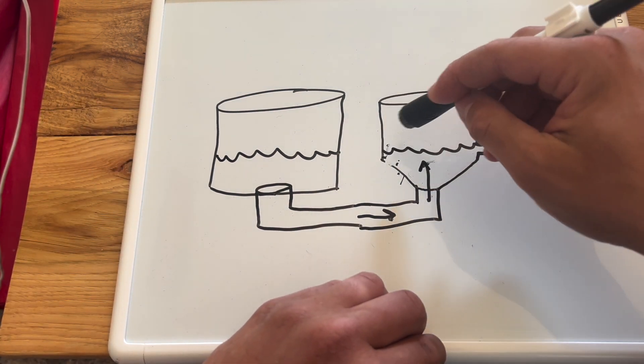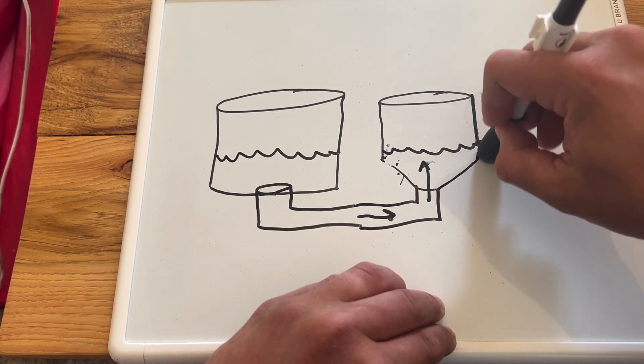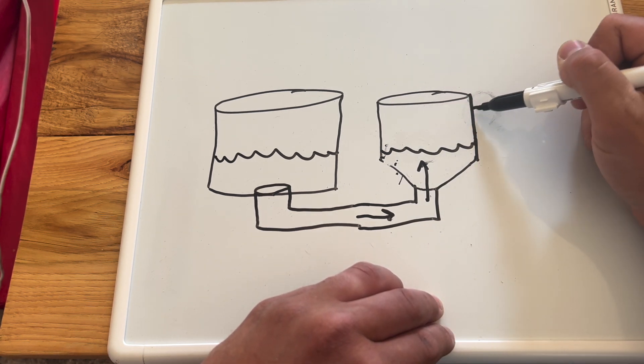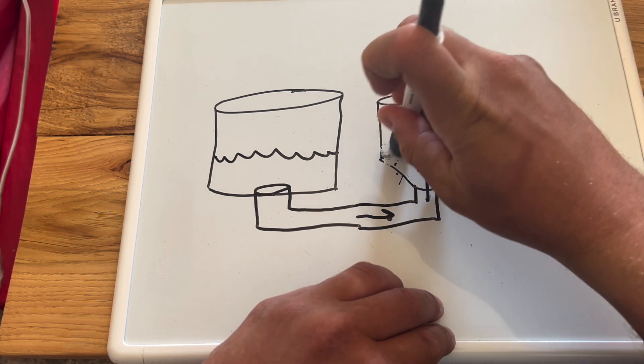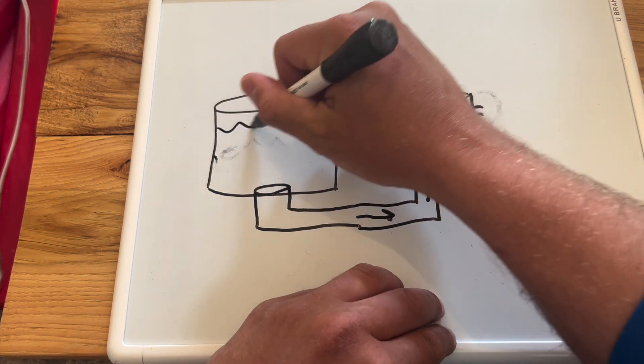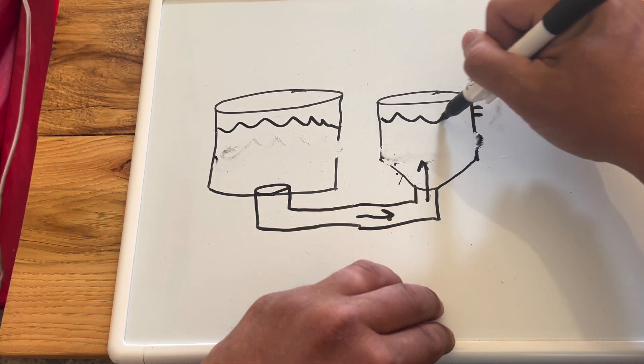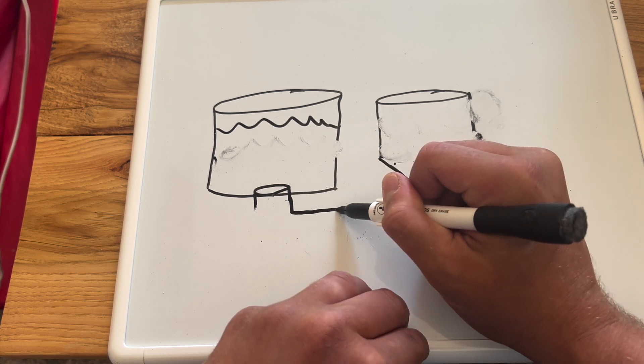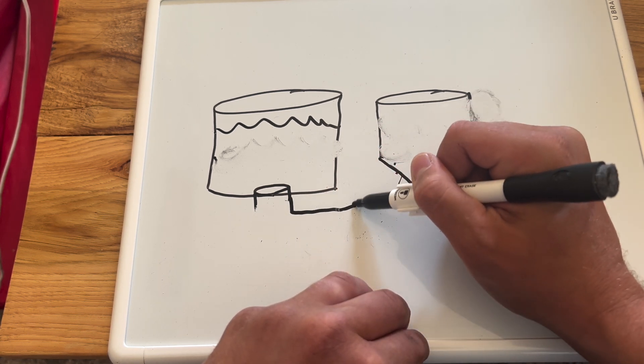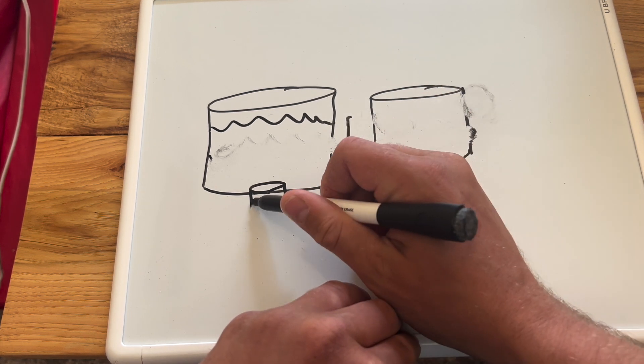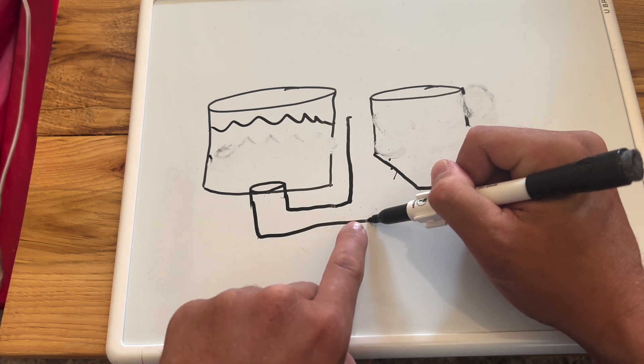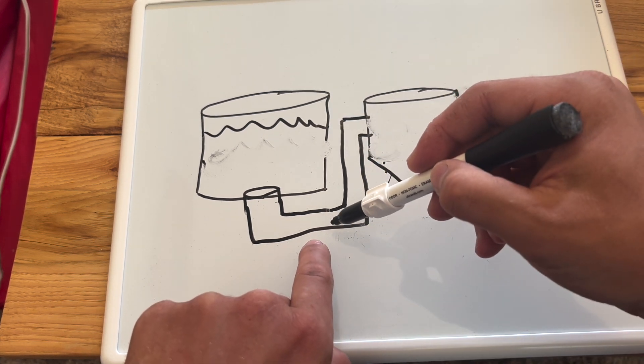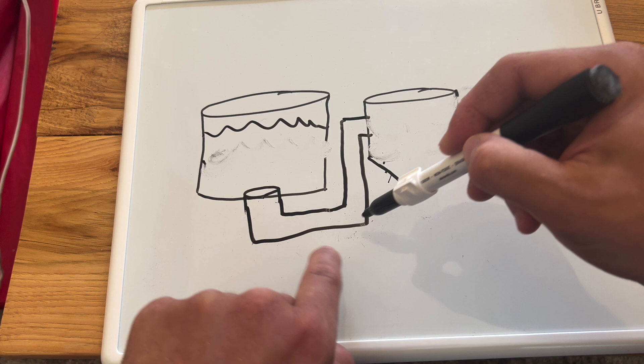So if you ever connect a center-bottom drain like this, you need to make sure that your exit is up higher. And that's going to allow your water height to be up there. You can also plumb it like this, and I would recommend, you see how I came up here at a 90 degree angle? You probably want to use two 45s so it's a more gradual bend.